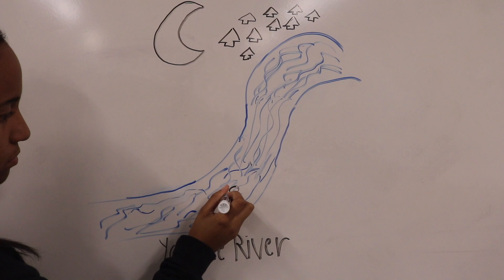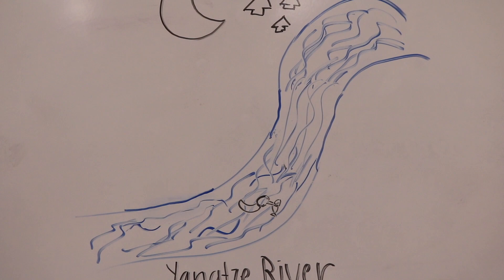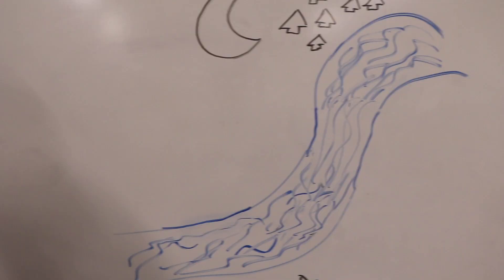After a long while, the cormorant emerged from beneath the waters with a large fish. When Wen gutted the fish, he discovered a valuable pearl ring.